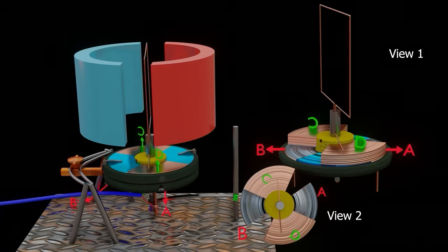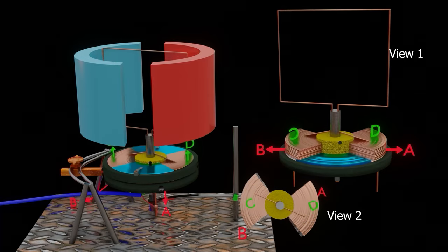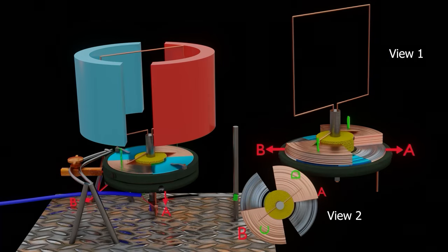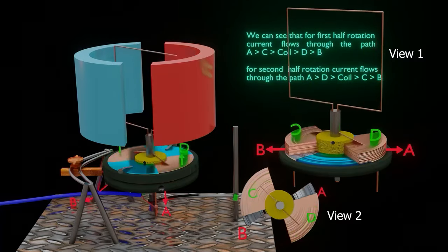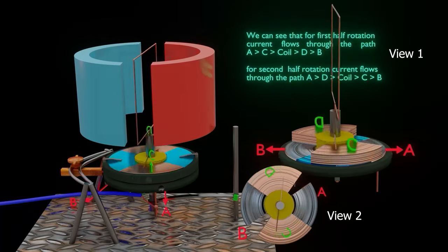For second half rotation, segments A, D, and segments B, C are in contact. Thus, we can see how this commutator changes the direction of current in the coil.